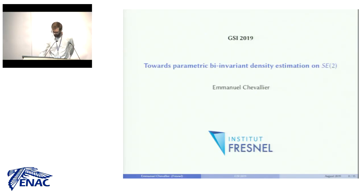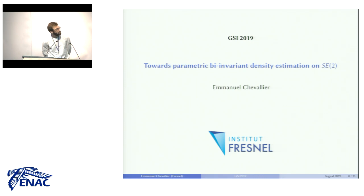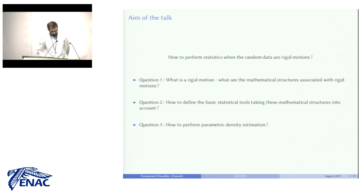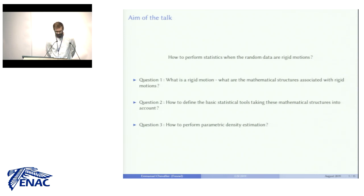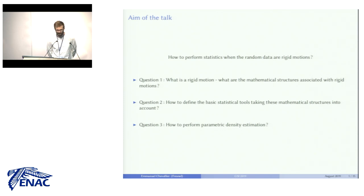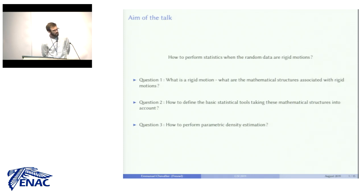This work is a direct continuation of the work of Xavier Pennec on invariant means on Lie groups. The general question is how to perform statistics when the random object is a rigid motion. The first thing we need to ask is what are the mathematical structures of this set, and we will see that it is a Lie group.